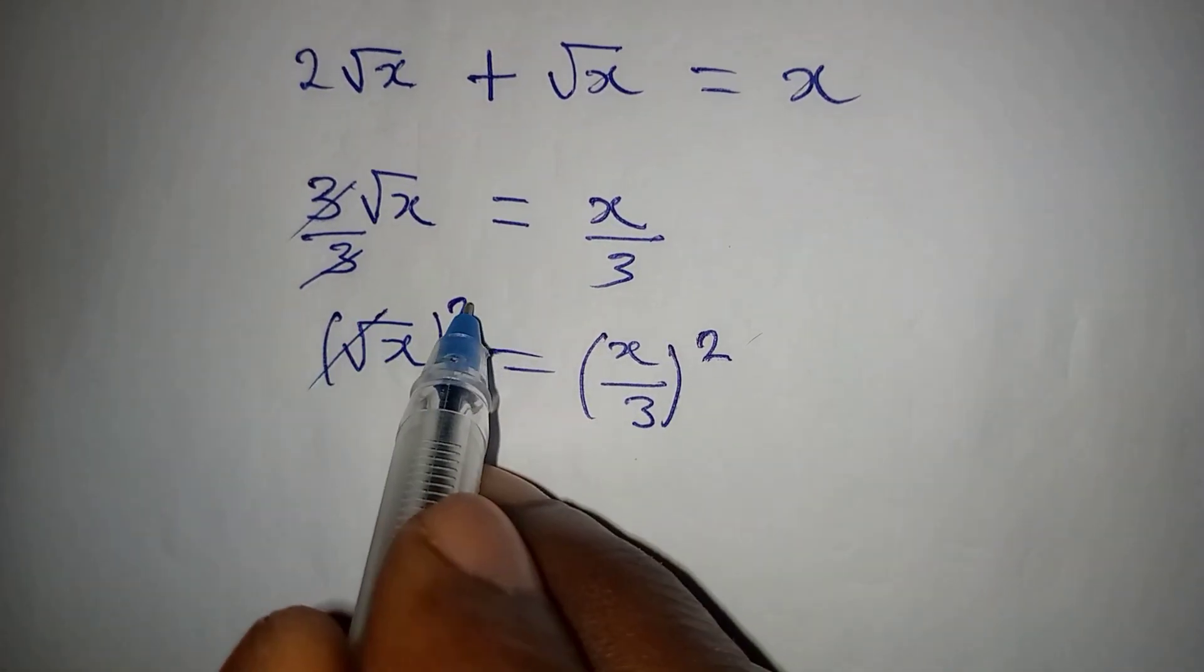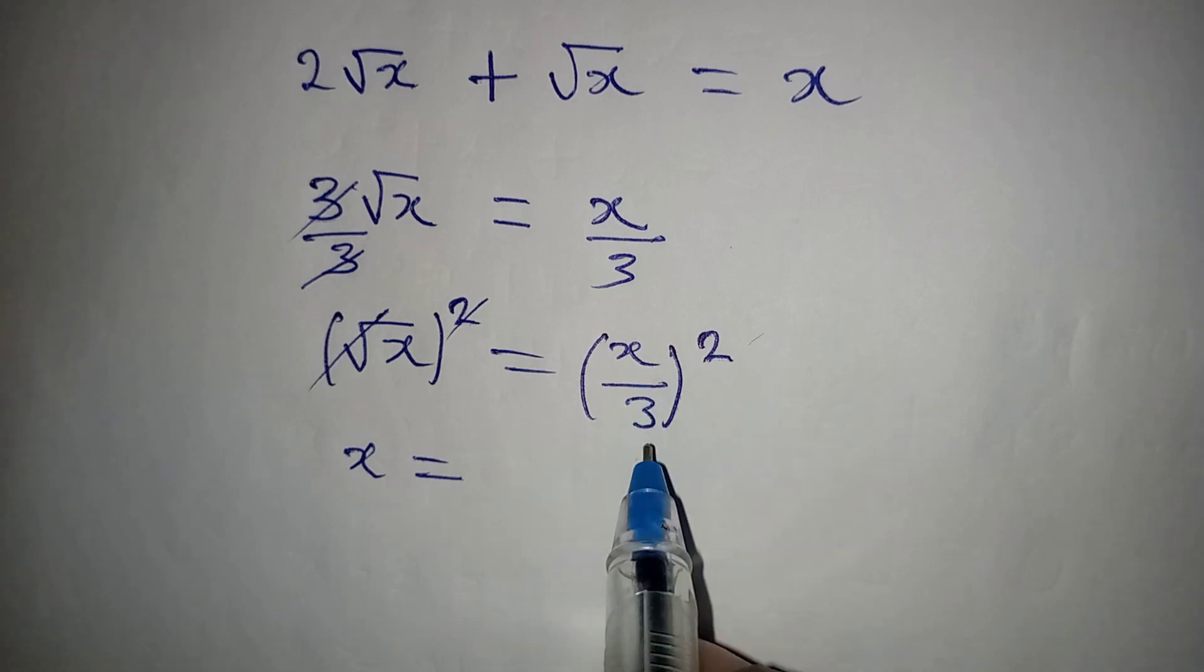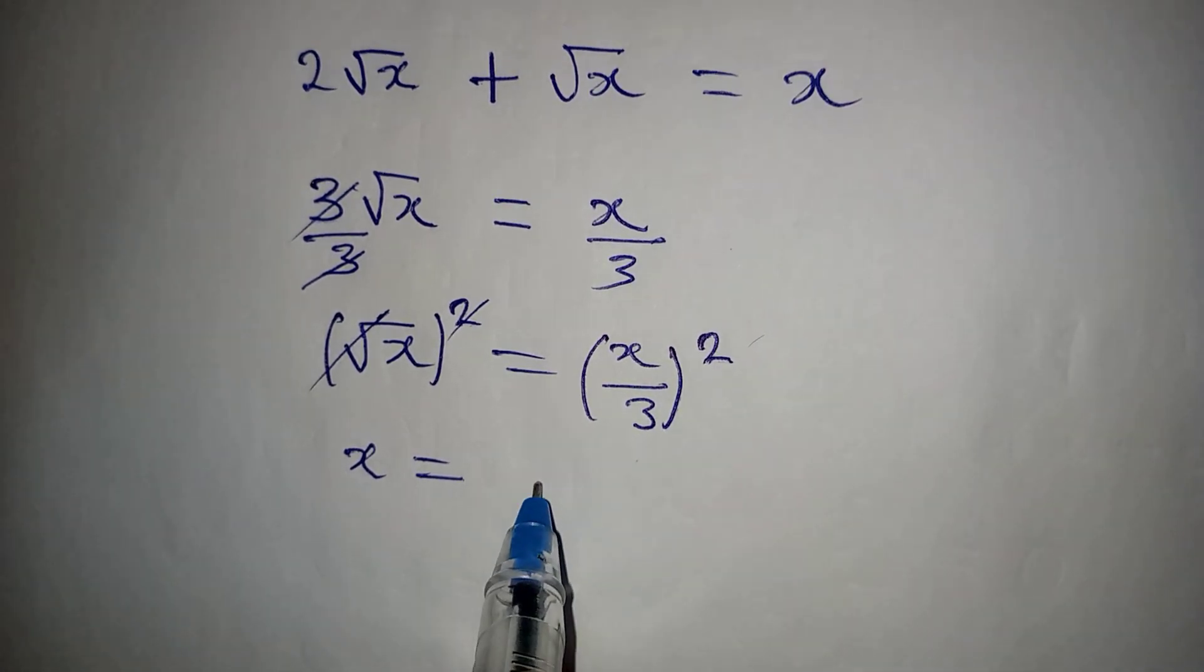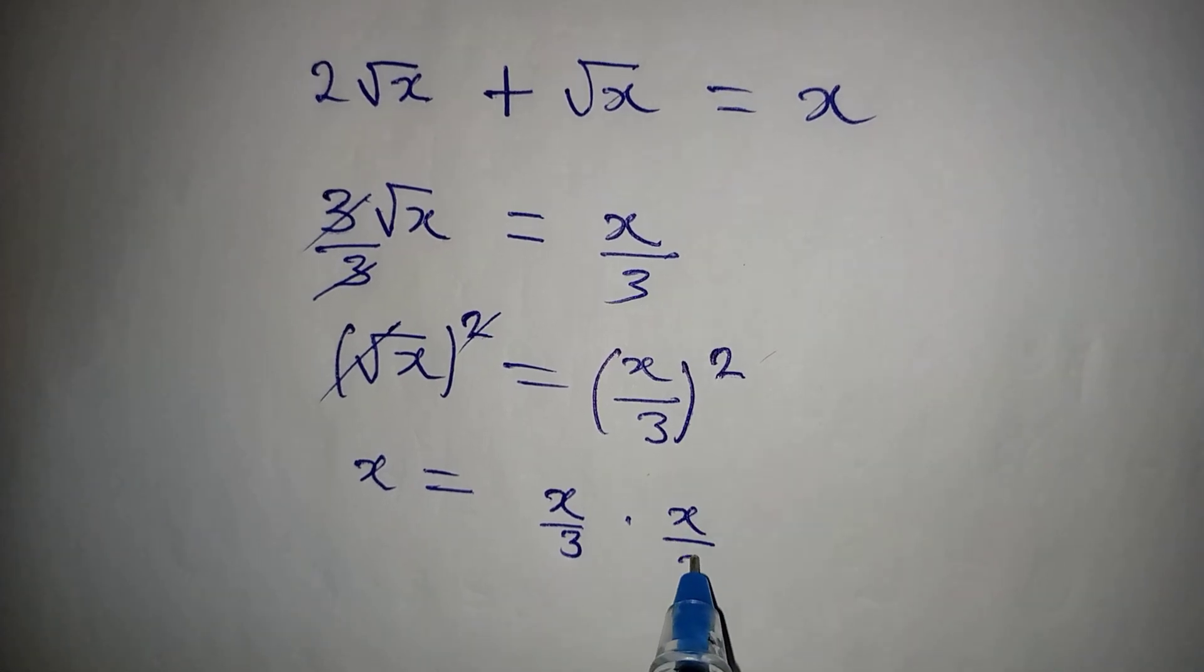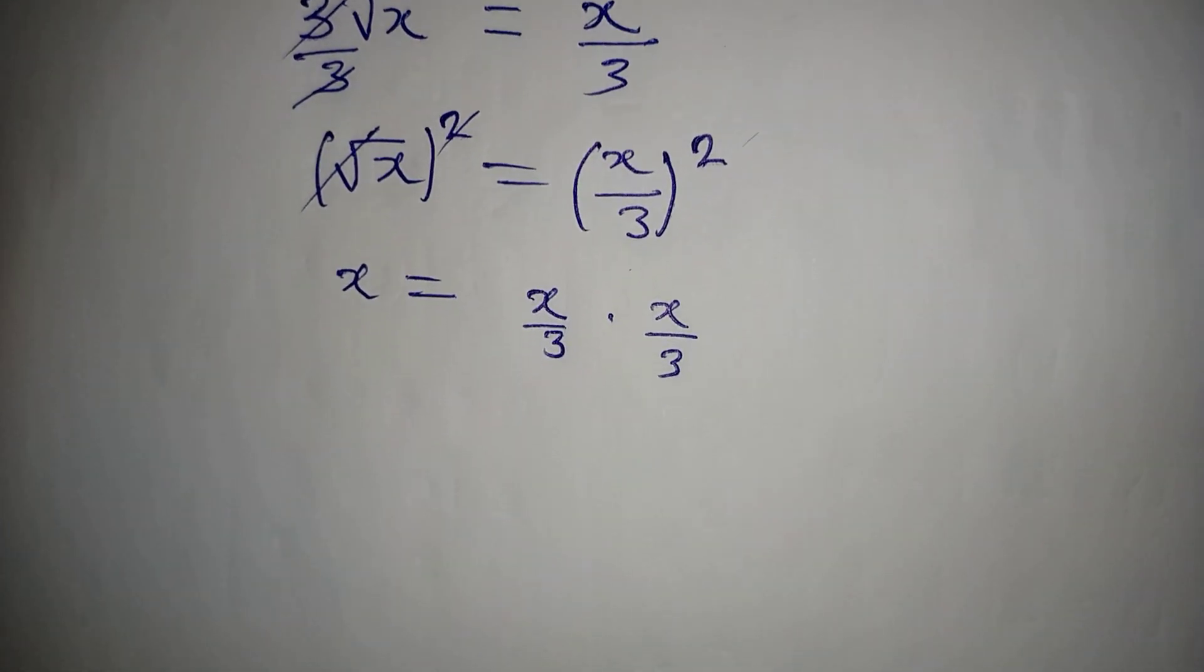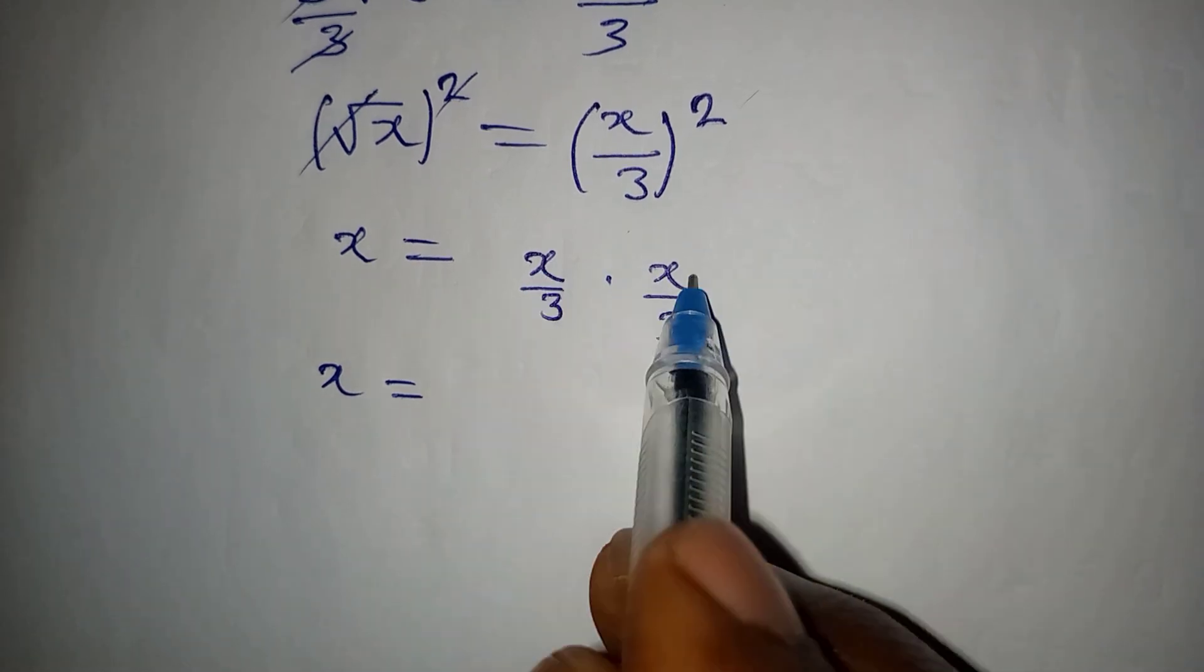So from here, this will go with this, and then x will be equal to (x/3)². That will be x/3 multiplied by x/3. Now to continue, x will be equal to x times x, which is x² over 3 times 3, which is 9.